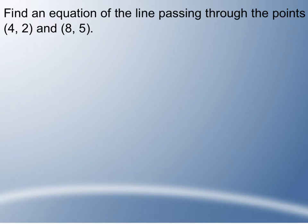Our second example, we have to find an equation of a line passing through points (4, 2) and (8, 5). Now we have two points, so I cannot yet use the point-slope formula because I don't know what the slope is. Fortunately, I can find the slope using the formula y2 minus y1 over x2 minus x1. So I'm going to rewrite the two points and label my points x1, y1, x2, y2.